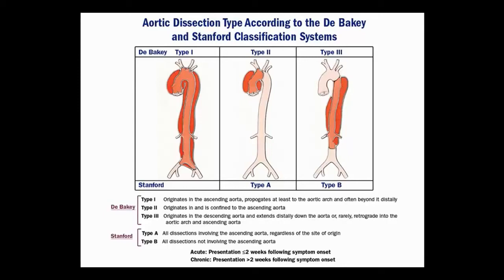That distinction is important because management differs. You should also know that sometimes people have a chronic aortic dissection, presenting after a few weeks. Normally we think of aortic dissection as time-critical — mortality goes up about 1% per hour, so it's an emergency. But when people have survived the initial event, their prognosis is a little better. A chronic dissection is defined as one that occurred more than two weeks ago.